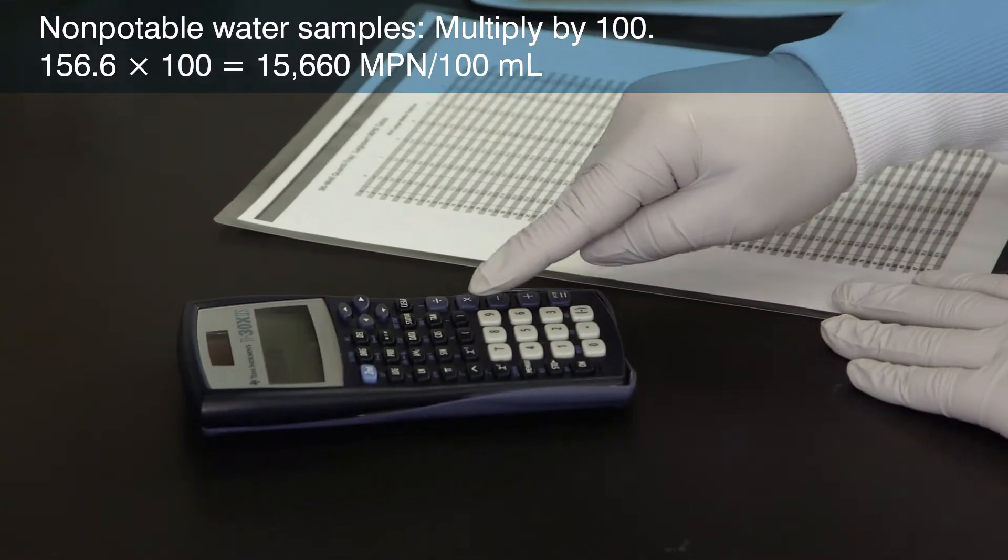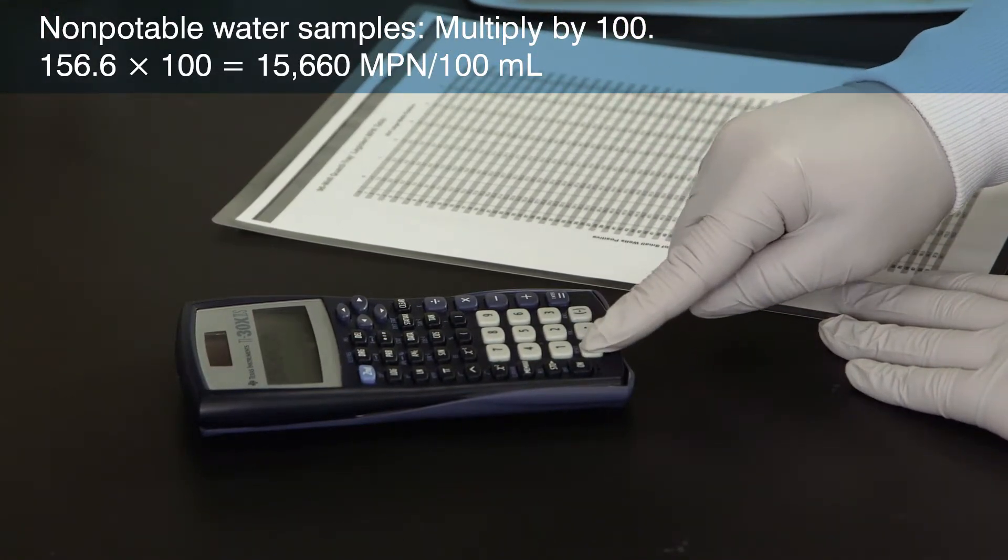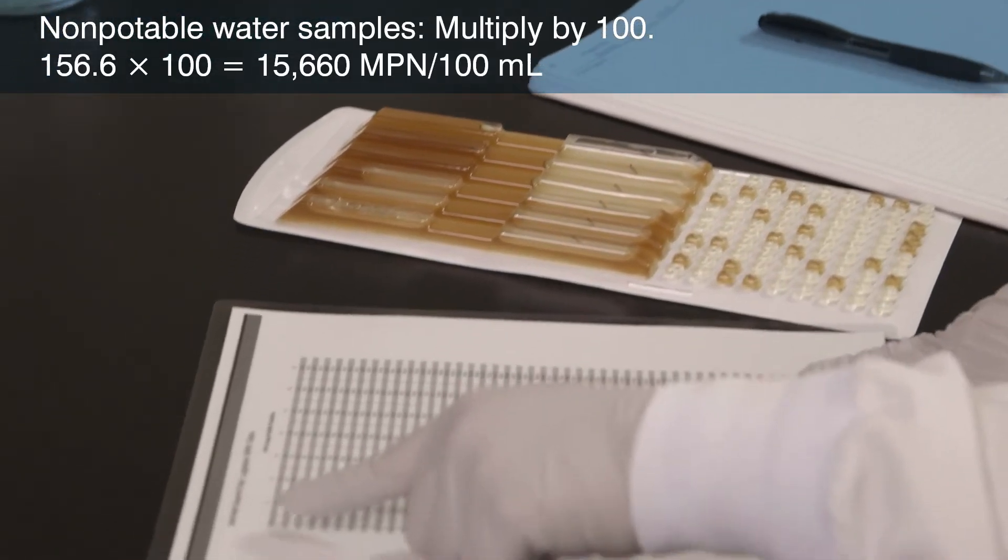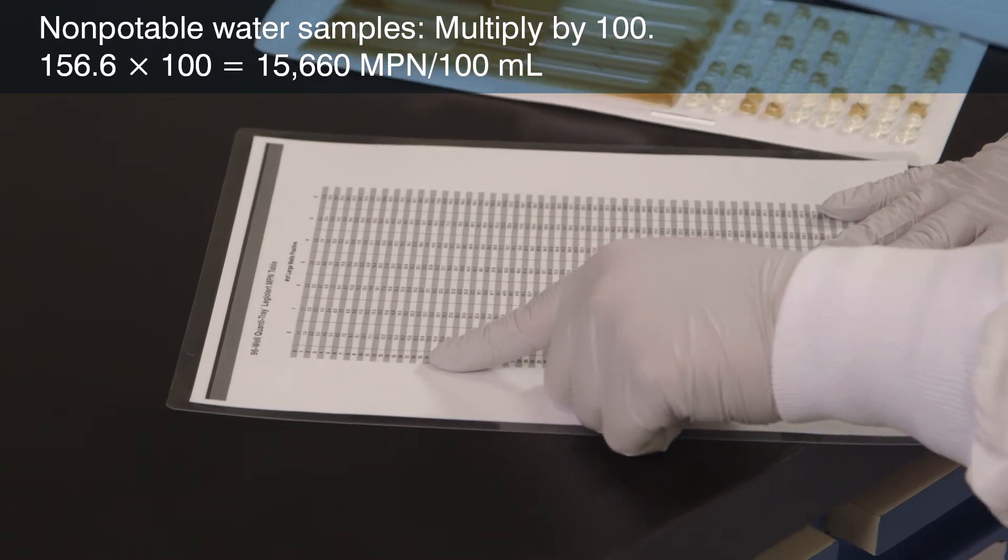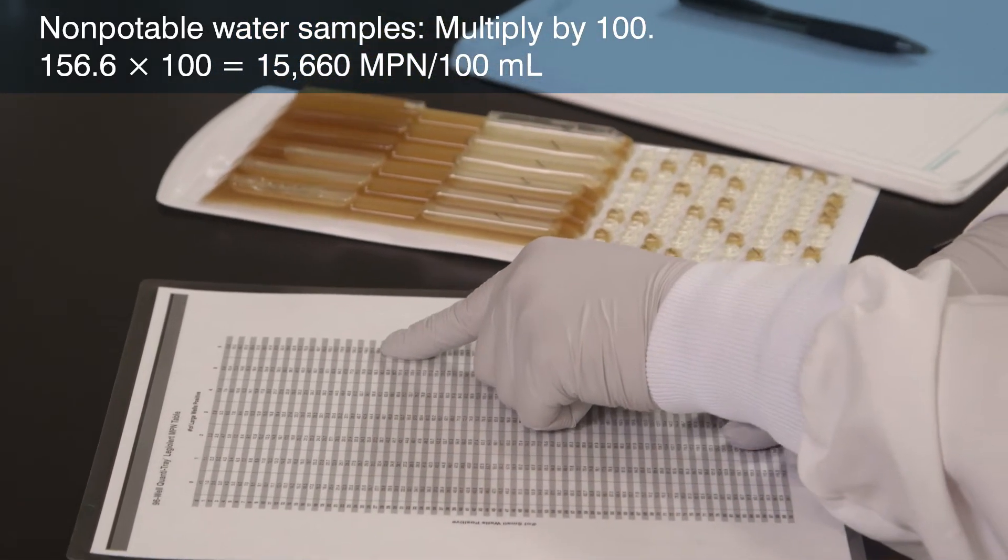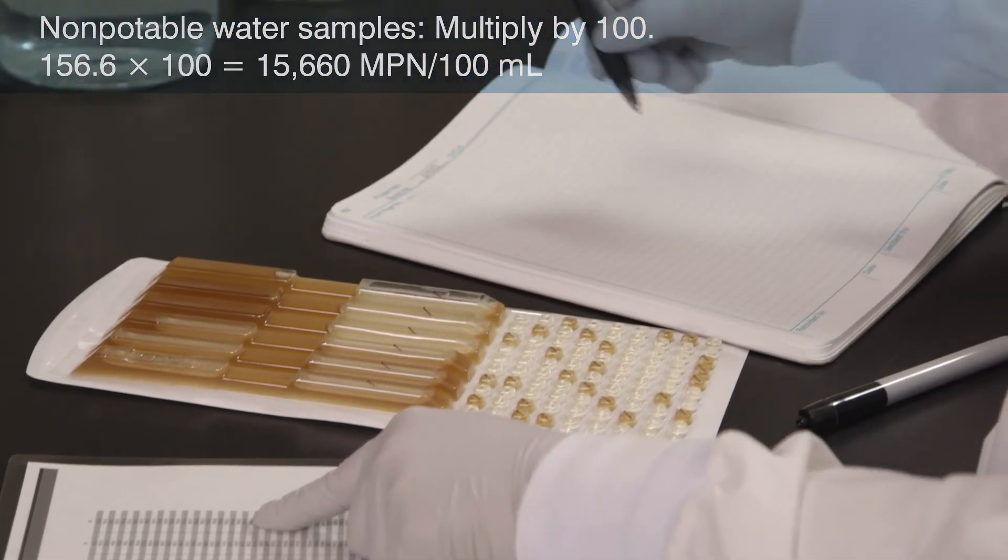To obtain the MPN per 100 mL, remember to multiply the MPN by 100 because you're using 1 mL of the original sample. The most probable number for this non-potable water example is 156.6 multiplied by a dilution factor of 100 to achieve 15,660 MPN per 100 mL.